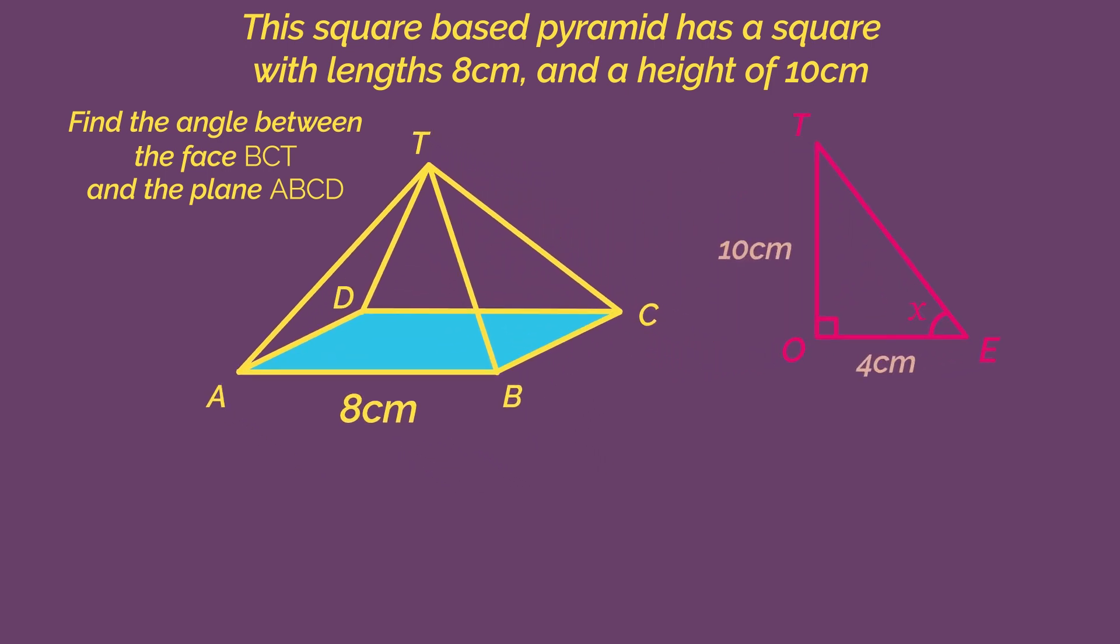Now we have a right-angle triangle with a base of 4 because it's half the length of AB, and a height of 10.